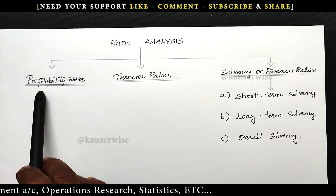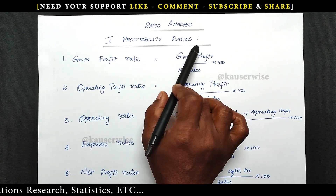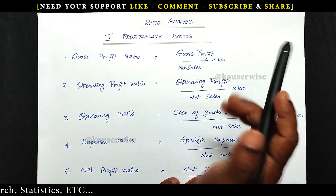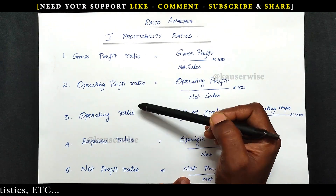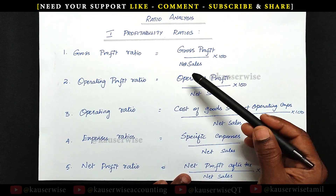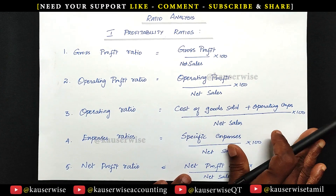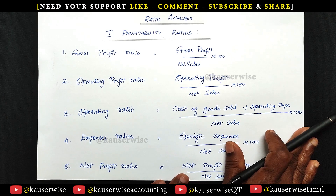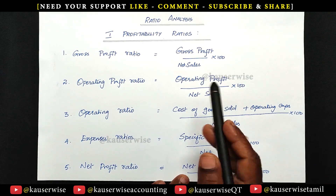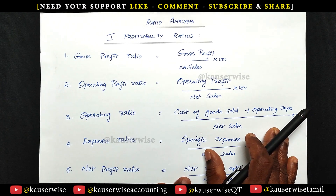The first one is profitability ratio. In the profitability ratio, it has 15 ratios. The first five ratios are based on net sales, which we discussed in the previous video — the link is available in the description box. In this video, we are going to see the remaining profitability ratios along with one numerical problem.